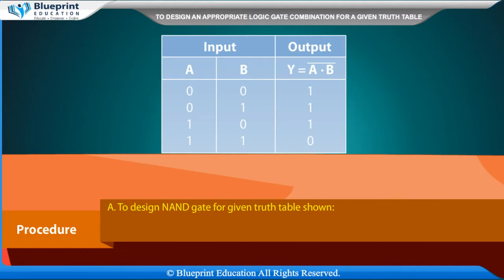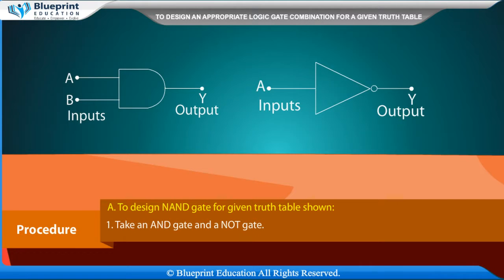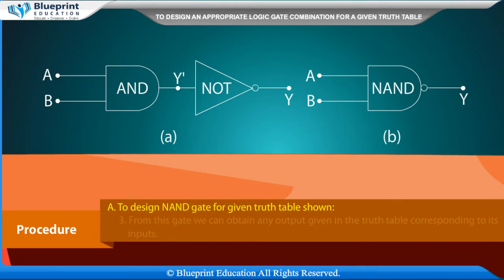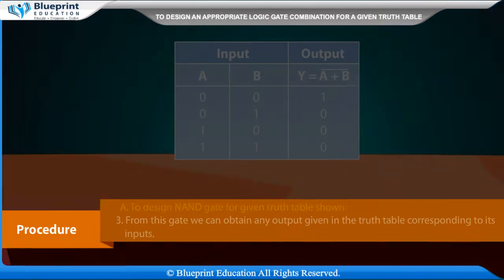To design a NAND gate for a given truth table: take an AND gate and a NOT gate, and connect the output of the AND gate to the input of the NOT gate. This arrangement is called a NAND gate. From this gate we can obtain any output given in the truth table corresponding to its inputs.